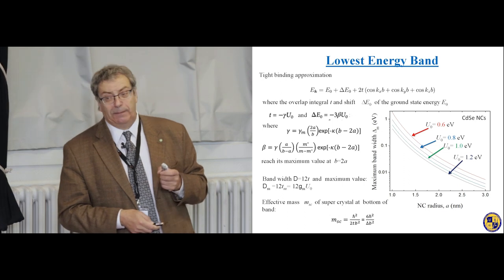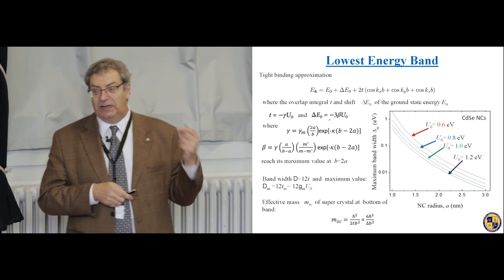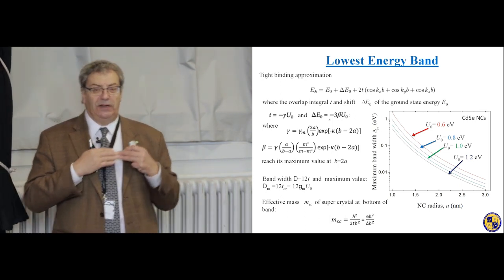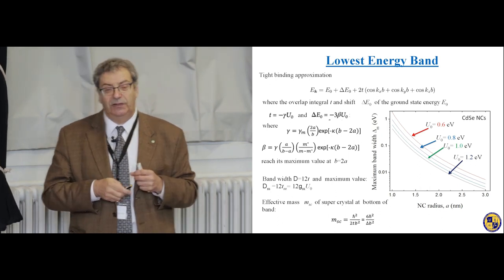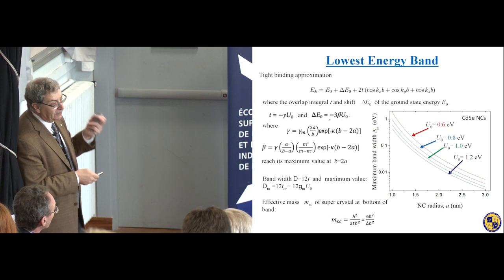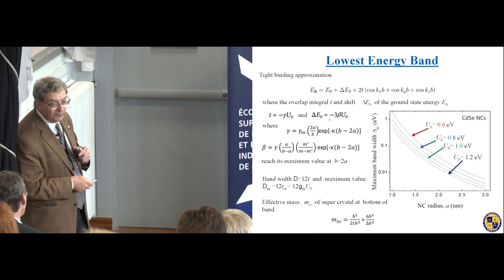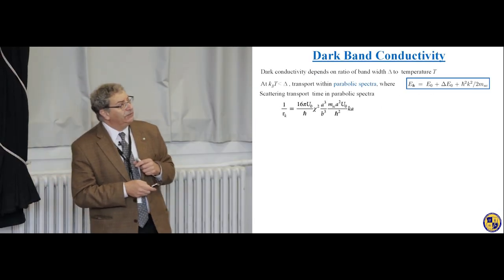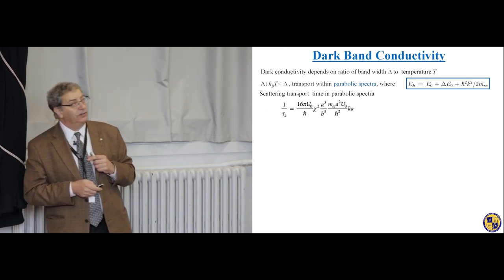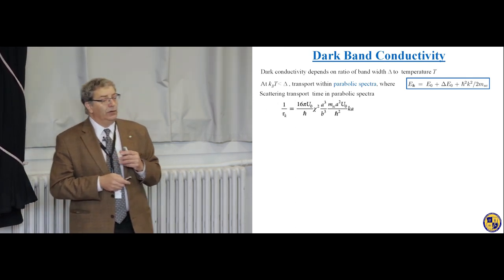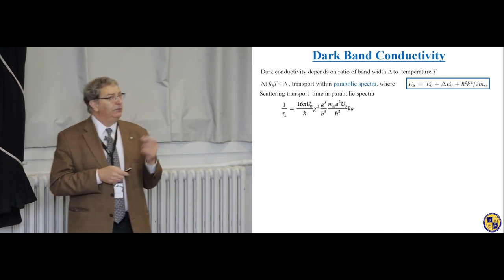In this case, we characterize band motion using the effective mass of the supercrystal, calculated from this expression. This mass is inversely proportional to the bandwidth. In structures with a narrow bandwidth, the effective mass is heavy, and we have very fast localization of carriers. But in bands with ~100 meV, the effective mass of electrons is much smaller than the effective mass of free electrons. So dark conductivity in this band strongly depends on the ratio of bandwidth to temperature.